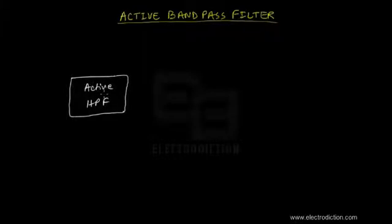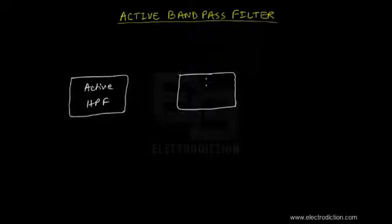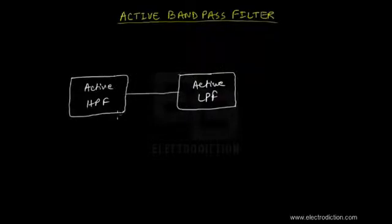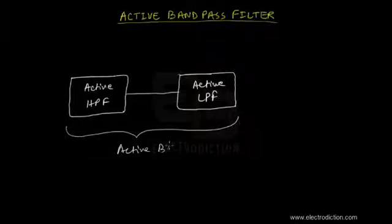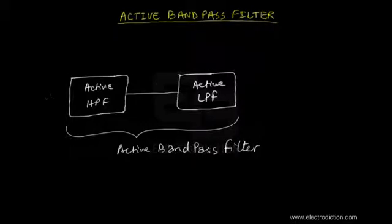Let's connect an active high pass filter — HPF for short — and then an active low pass filter over here. There we go. Now you just cascade these stages together, and this entire thing, including the active high pass and the active low pass filters together, is your active bandpass filter.